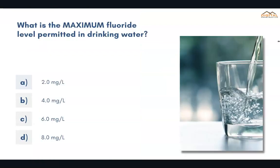What is the maximum fluoride level permitted in drinking water? The correct answer is B, 4.0 milligrams per liter.